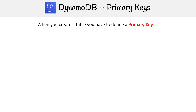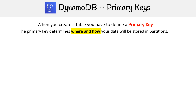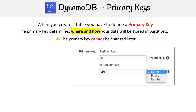When you create a table, you have to define a primary key, and this key is going to determine where and how your data will be stored in partitions. It's important to note that the primary key cannot be changed later, so designing your primary key and making the right choice early on is extremely important, because you only get one shot at this.